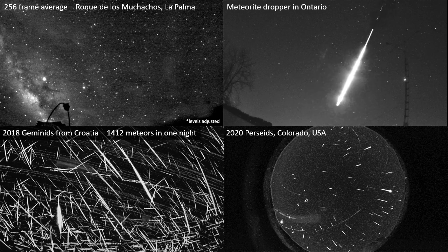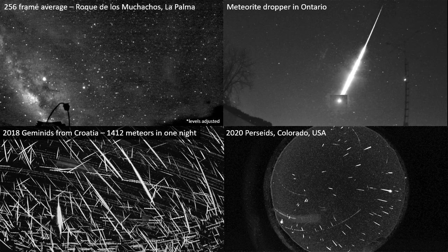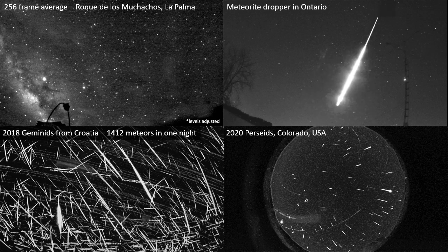When there's a major meteor shower active, sometimes we can get thousands of meteors per night, per camera. We also have a couple of all-sky systems deployed, but we don't really use them for trajectory purposes, just because of the low resolution.